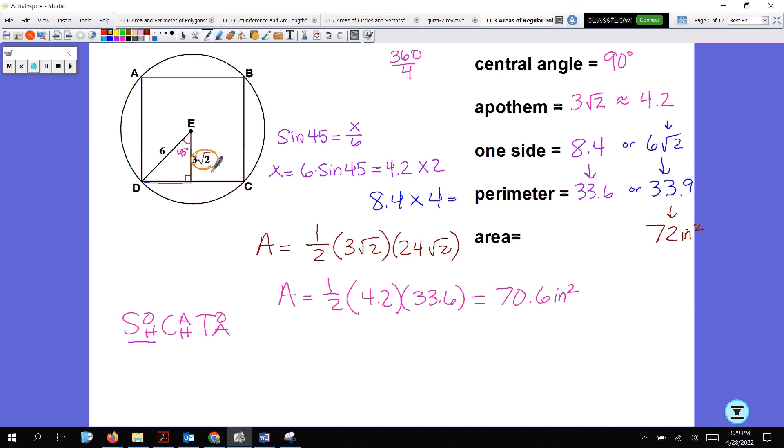If I just played around with my calculator, and if I used the apothem, which was given as 3 root 2, and then I used this decimal here, which is 4 times 6 root 2, which in the calculator is 33.9, that gives me 71.9. This is a lot closer to 72 than 70.6. So if you're given the apothem, use it. I don't care if it has a radical in it or not.